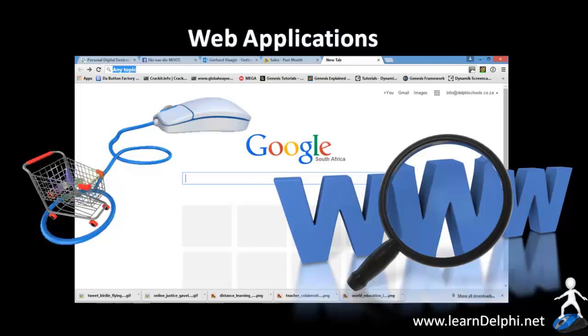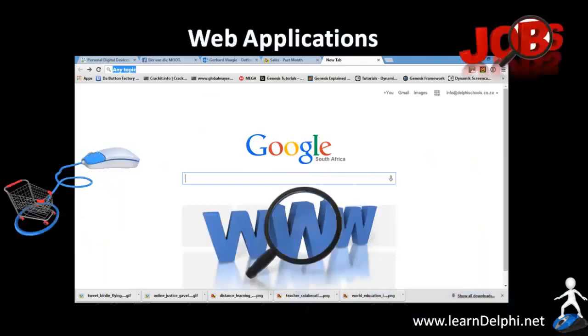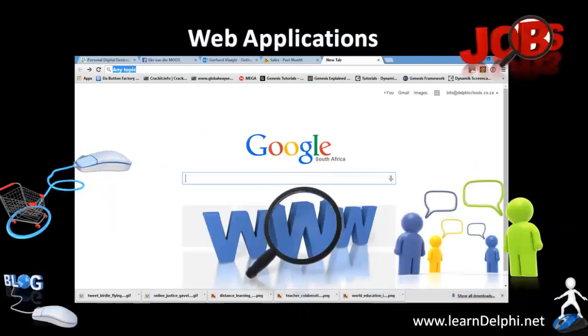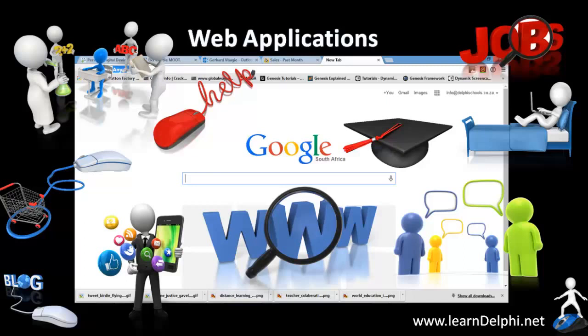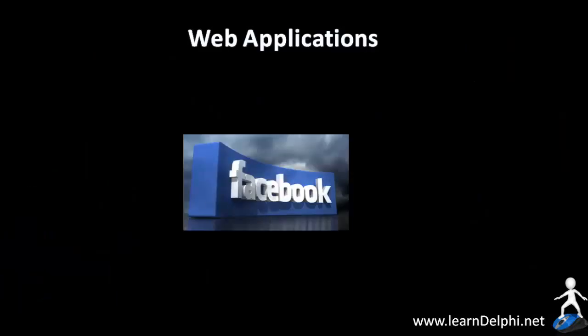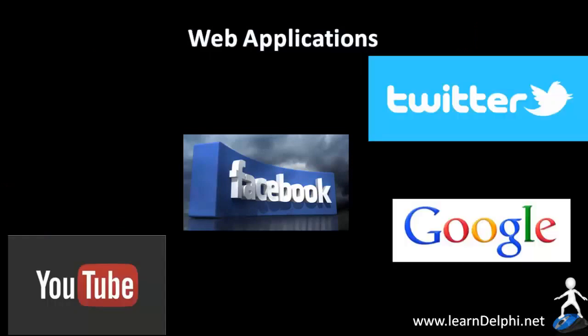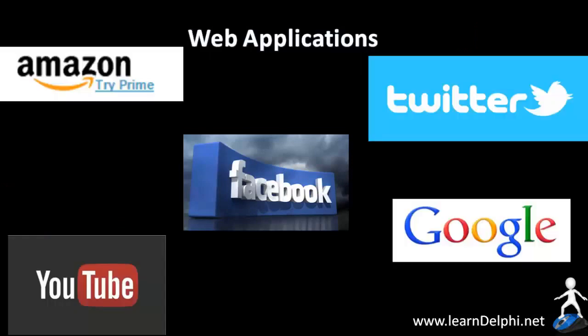With all the different types of websites on the internet, the way that we do business, the way that we communicate, the way that we socialize, the way that we learn, and the way that we live, changed forever. Just think of all the information, products, services, conversations, and fun that are available to you with the click of your mouse button. Websites like Facebook, YouTube, Twitter, Google, and Amazon made the world a much smaller place than it used to be.